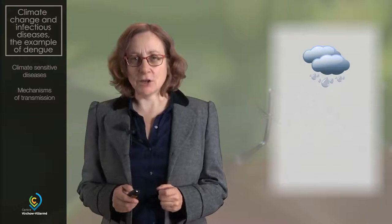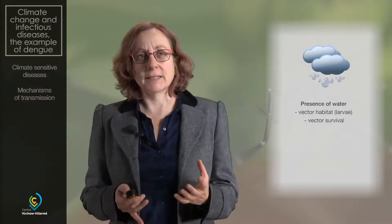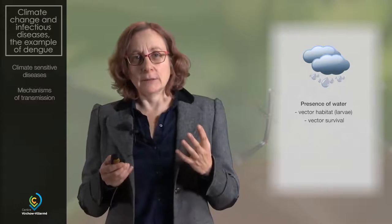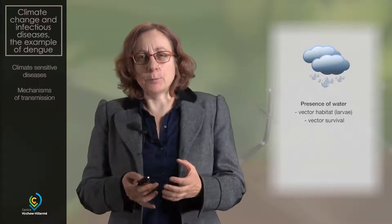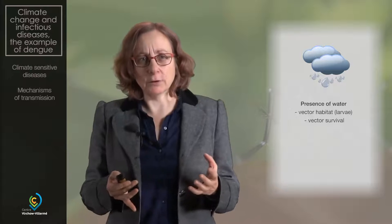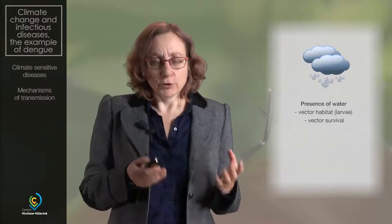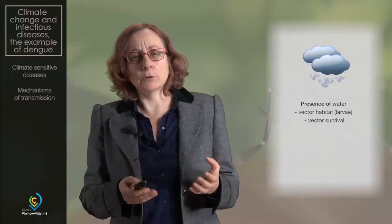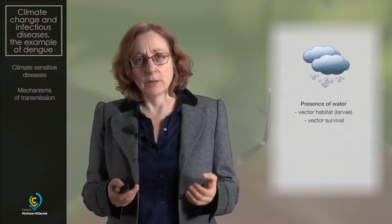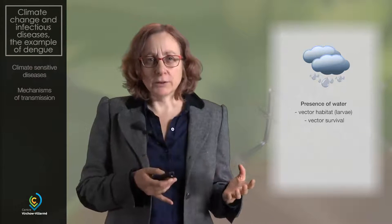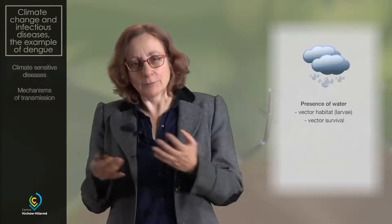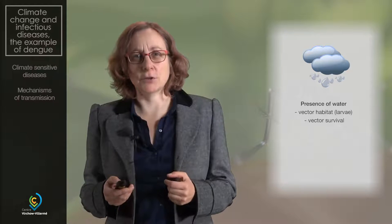When it comes to precipitation, it is crucial because rainfall creates the habitat for the vector. The presence of water is a place where the mosquito, for example, can breed and develop. So without water, often no vector, no transmission.